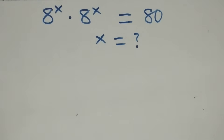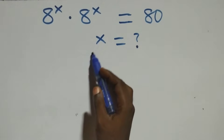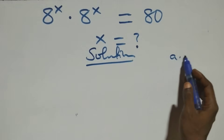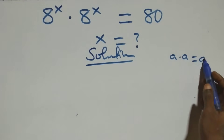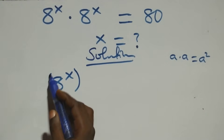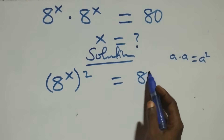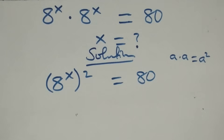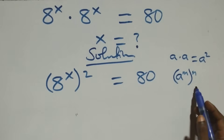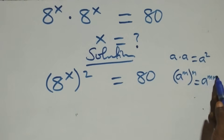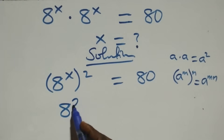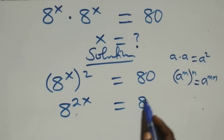Hello, welcome. Here's how to solve this nice exponential equation. We have a times a which can be written as a squared. Multiplying, we can write it as a raised to power x, squared. Using the rule a raised to power m raised to power n equals a raised to power mn, this power multiplies and becomes 8 raised to power 2x equals 80.